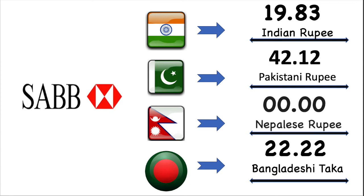Now we are going to talk about Saudi British Bank exchange value for each country in details. Indian Rupees market exchange value is 19.83. Pakistan Rupees market exchange value is 42.12. Nepal Rupees market exchange value is 0.00 Nepalese Rupees. Bangladesh market exchange value is 22.22 Bangladesh Taka.